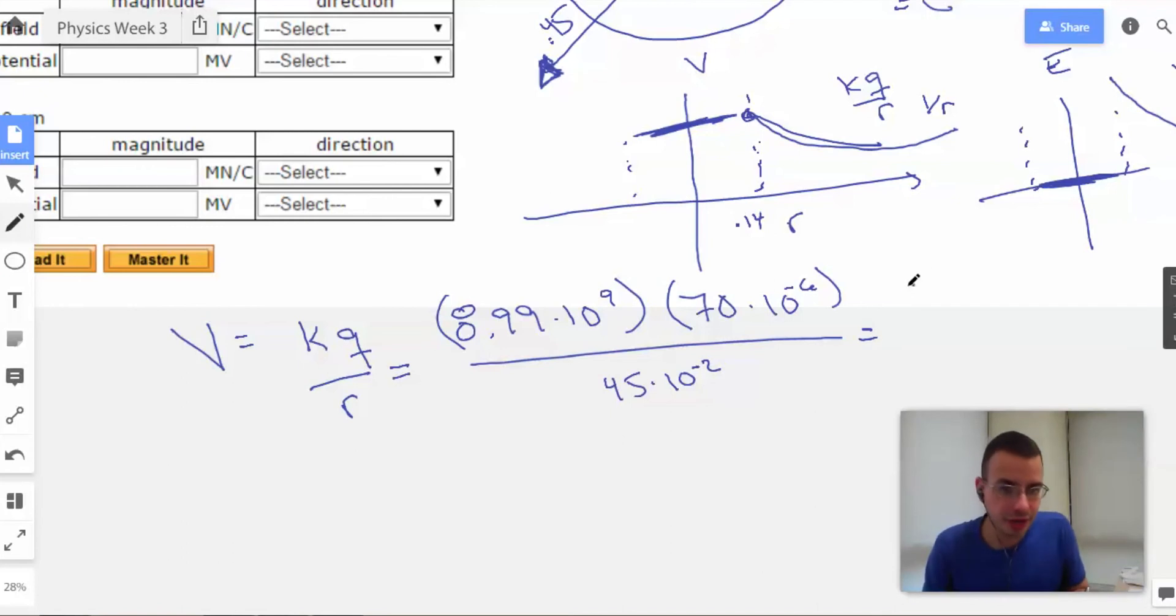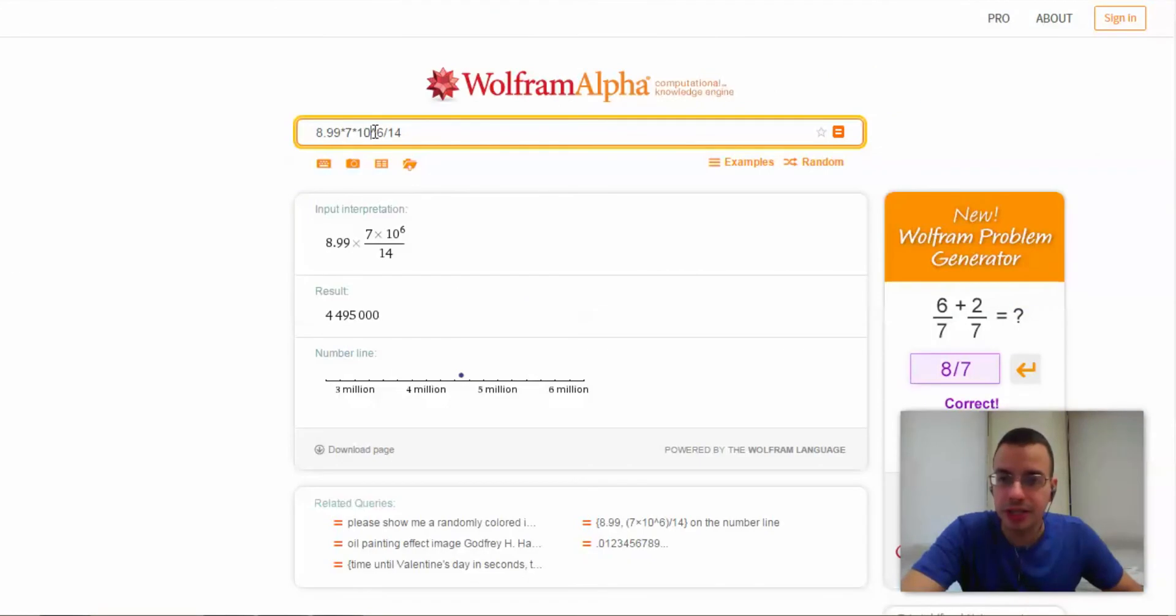Okay. Simplifying again, we're going to have 8.99 times 7 over 45 times 10, and again, this is going to be 10 to the 6th. I'm going to go back to my Wolfram and replace the 14 by 45.